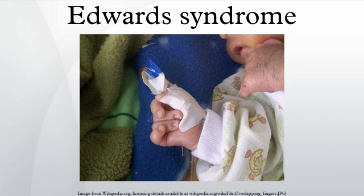It is the second most common autosomal trisomy, after Down syndrome, that carries to term. Edwards syndrome occurs in around 1 in 6,000 live births, and around 80% of those affected are female. The majority of fetuses with the syndrome die before birth. The incidence increases as the mother's age increases.